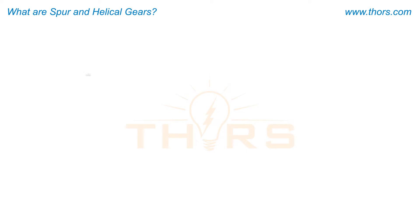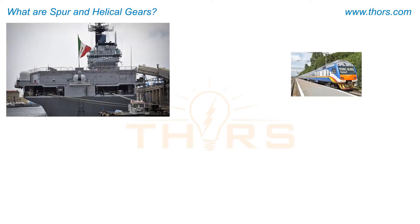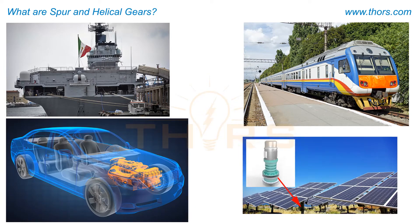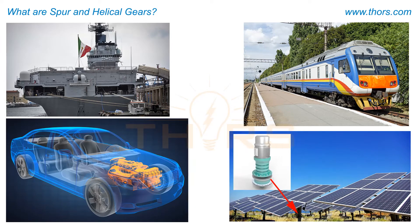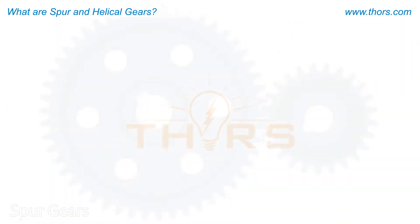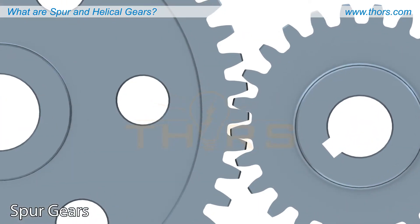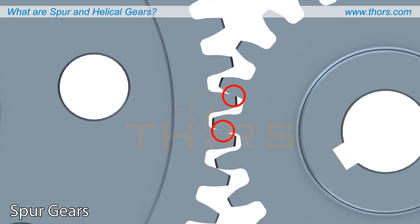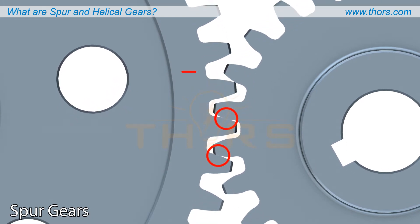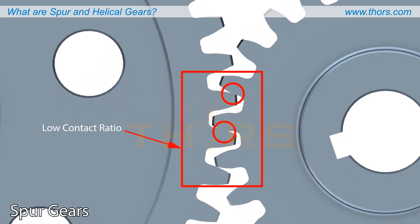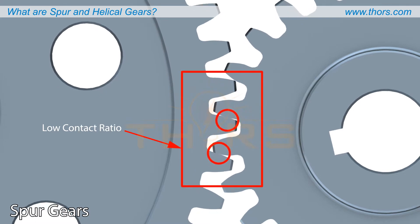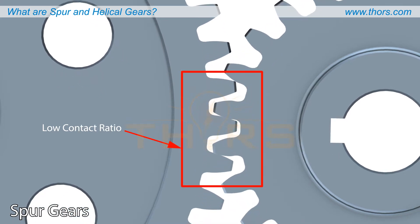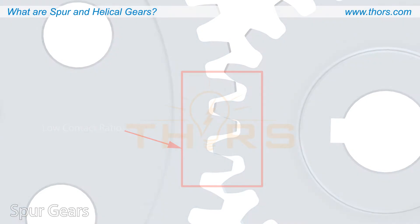Both spur and helical gears are used in a variety of everyday and complex equipment applications. While spur gears are relatively easy to manufacture at a lower cost, they have a low contact ratio which limits the loads that can be transmitted, often just through one tooth.